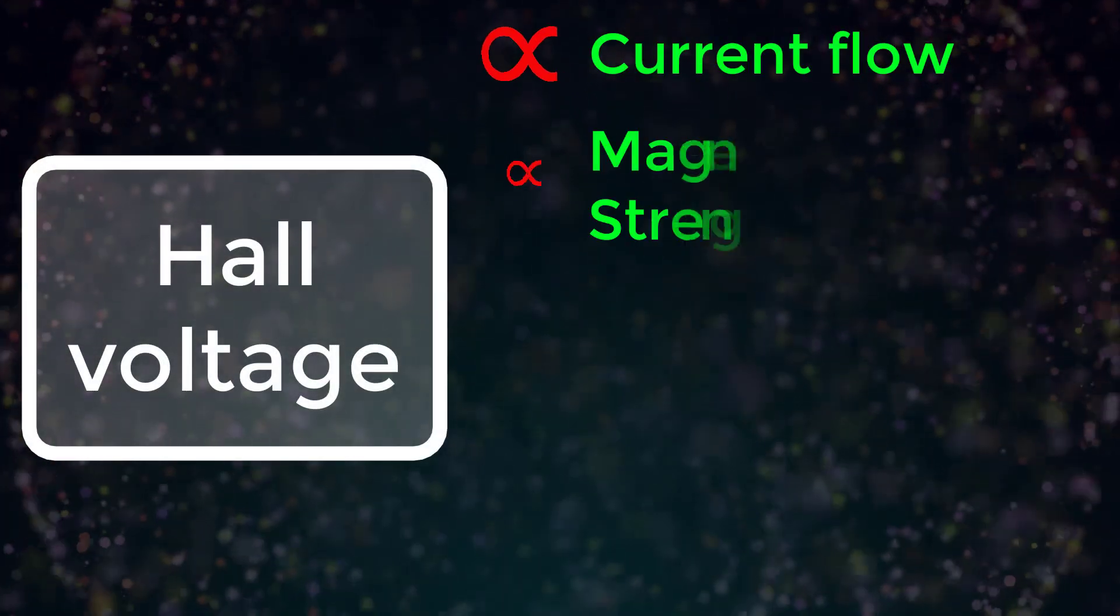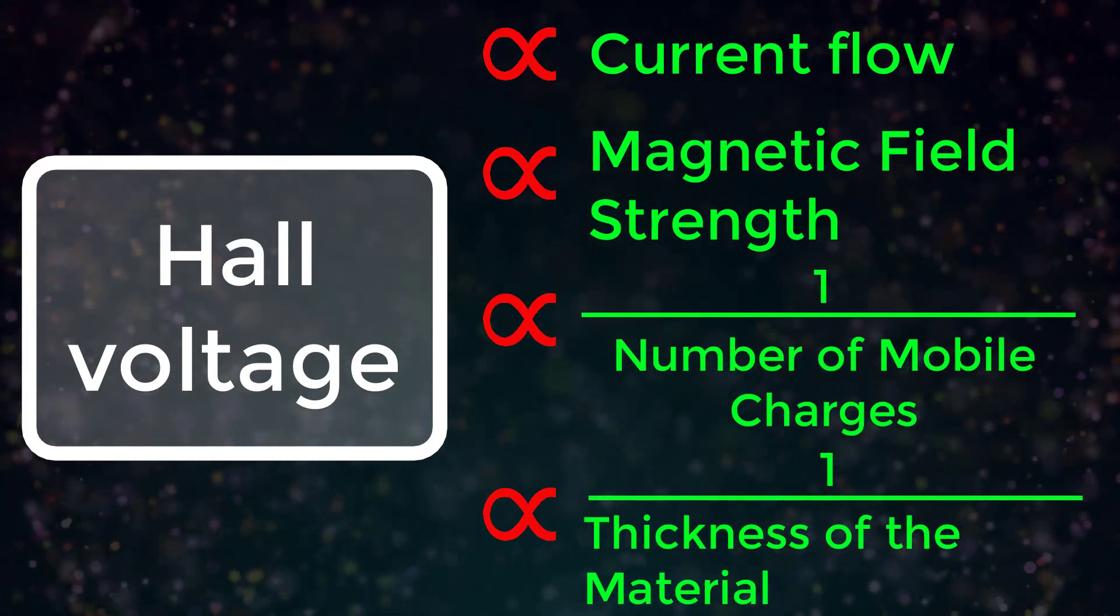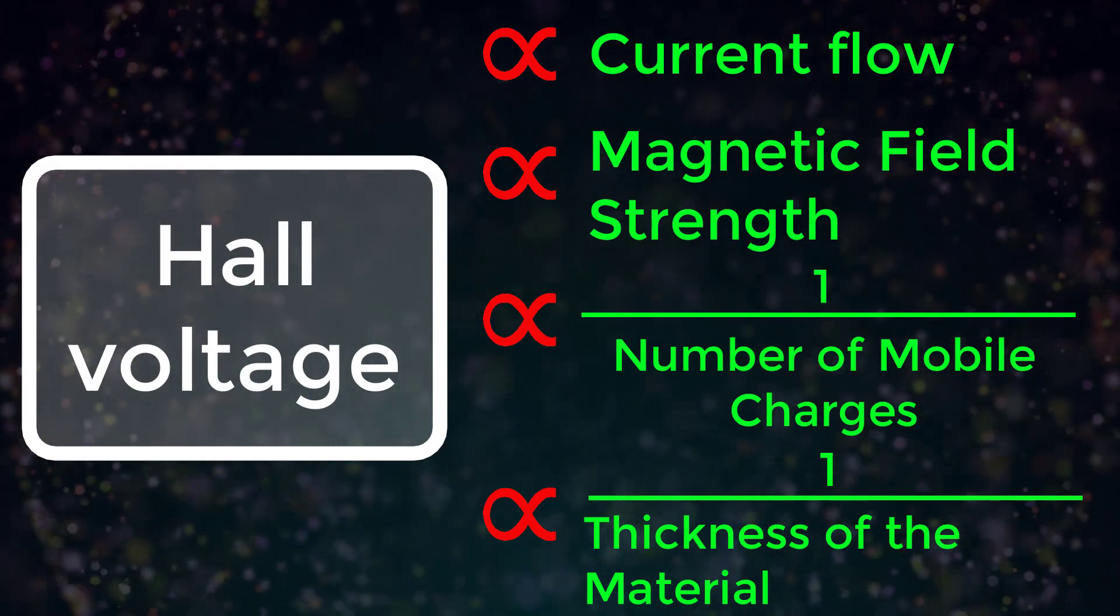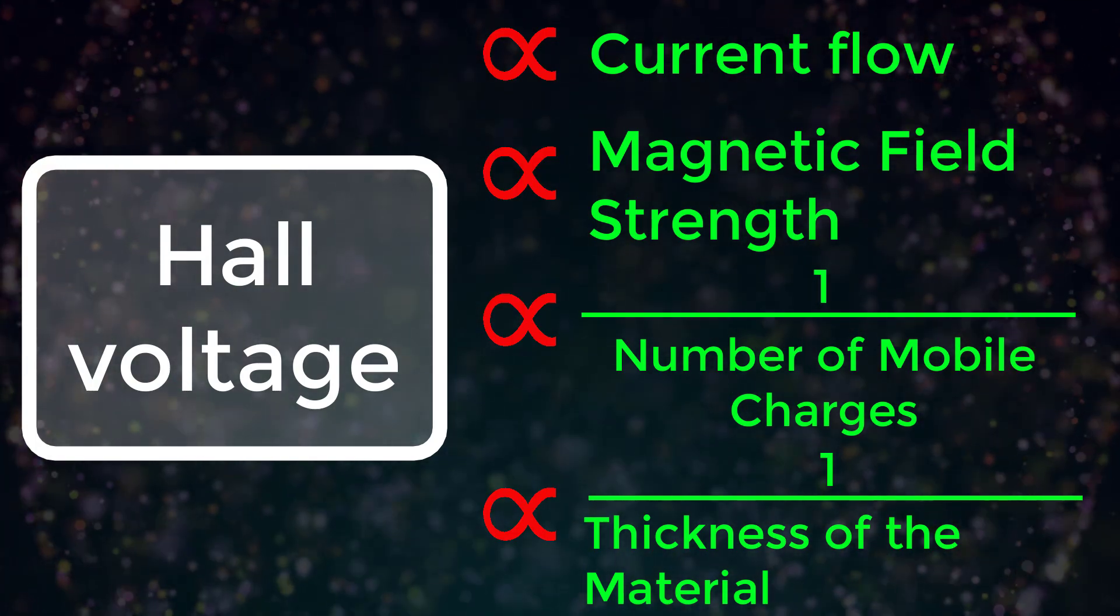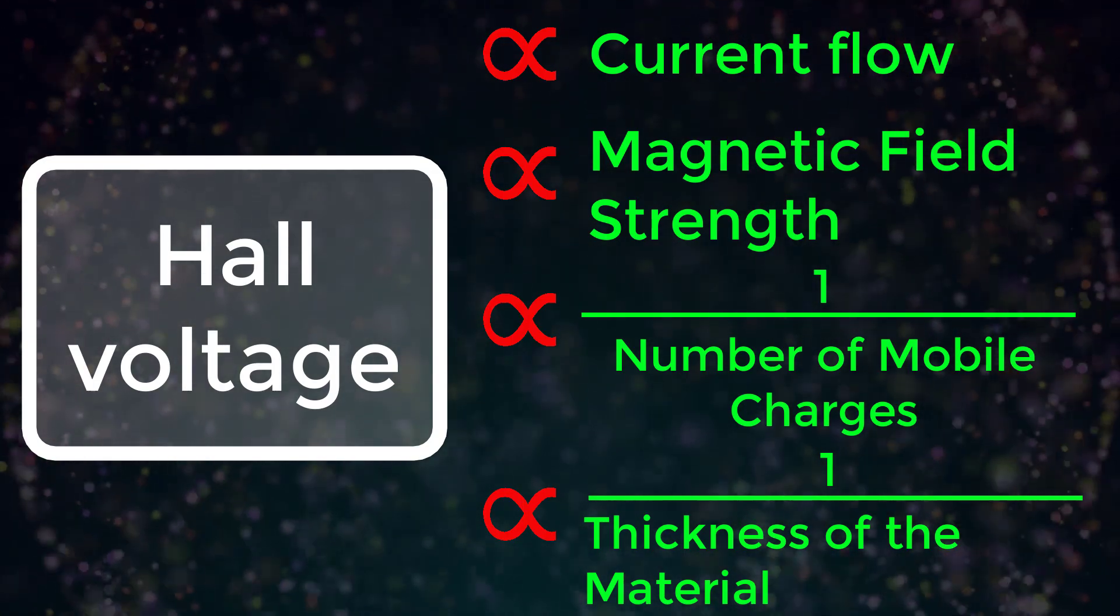The Hall voltage is directly proportional to the current flowing through the material and the magnetic field strength, and it is inversely proportional to the number of mobile charges in the material and the thickness of the material. So, in order to produce a large Hall voltage, we need to use a thin material with few mobile charges per unit volume.